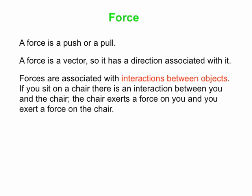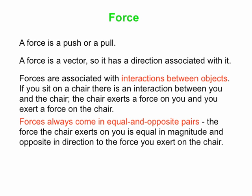Note that inanimate objects can exert forces — like chairs, tables, walls. You push on those things, they push you back. And we can make a stronger statement than that: this is what's called Newton's Third Law. Forces always come in equal and opposite pairs. So if you're sitting on a chair, the force the chair exerts on you is equal in magnitude and opposite in direction to the force you exert on the chair.